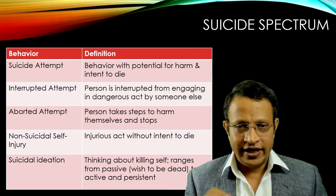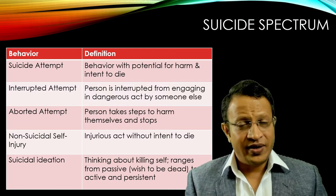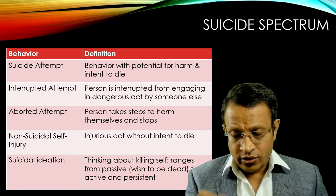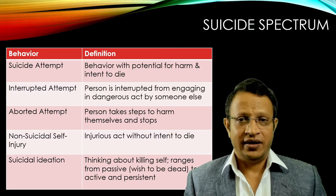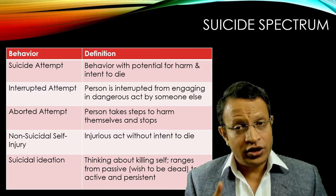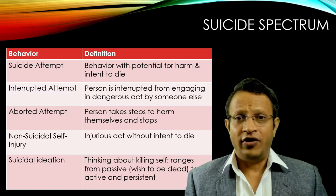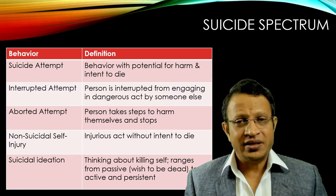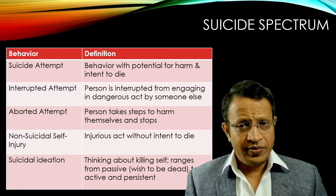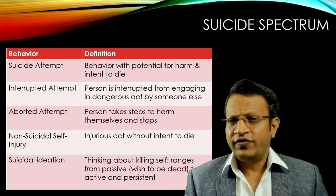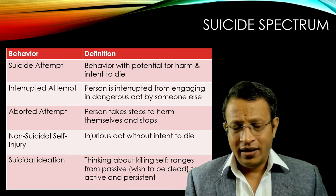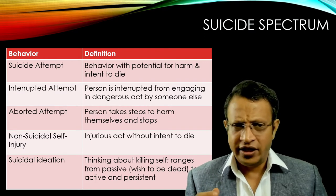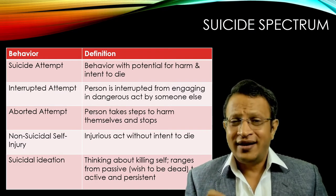The third one is aborted suicide, where a person takes steps to harm themselves but stops — they feel they should not do this. That is the aborted suicidal attempt. Next is non-suicidal self-injurious behavior, where there is an injurious act without intent to die. This deliberate self-harm is seen in the form of cutting oneself, often to gain attention from family members, and is seen in various personality disorders. Some people, because of frustration, cut themselves using a blade on the arm, forearm, or abdomen — during intoxication or frustration — to release that frustration.